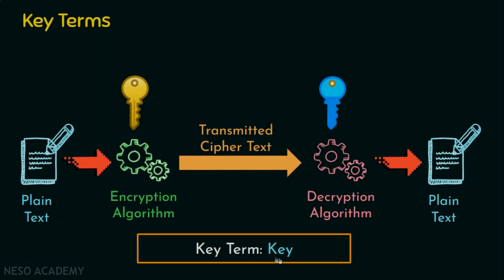The next key term is the key. The key is the most vital and critical piece of information as far as security is concerned. If an attacker knows a plaintext-ciphertext pair, it does not hurt communication much, because only that single pair is revealed. But if the key is known, everything is known — the attacker can break the entire communication, which becomes completely compromised. The key is the most important information that must be kept secret. Based on the number of keys, we have symmetric cryptography and asymmetric cryptography.